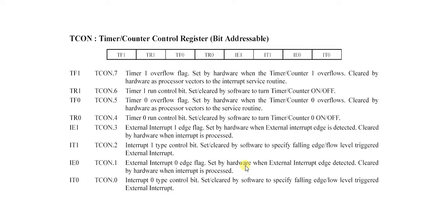TR1 means Timer1 run control bit. It is set to 1 by the programmer in the program to enable the timer to count, and it is cleared to 0 by the program to halt the timer. TF0 is the same overflow flag for Timer0, and TR0 is the same run control bit for Timer0, so these are similar.